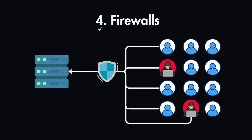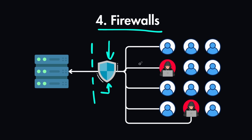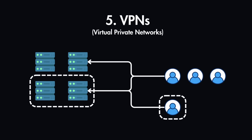The next technique is firewalls. A firewall acts as a gatekeeper, filtering malicious traffic from normal traffic — typically sitting between your API and incoming traffic. For example, AWS's Web Application Firewall can block requests with known attack patterns, such as suspicious SQL keywords or strange HTTP methods. This means it will block suspicious requests from attackers while allowing legitimate ones to reach your API.